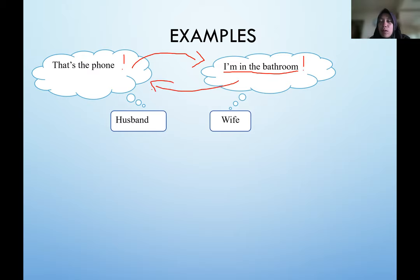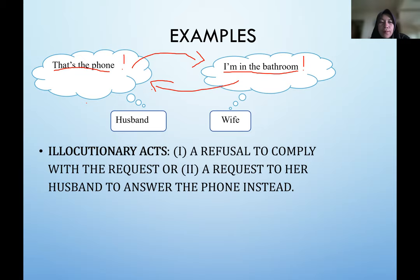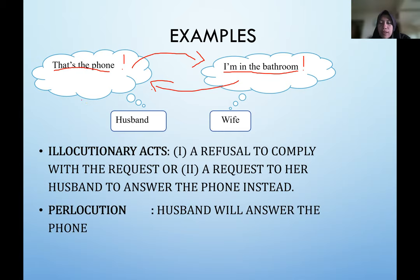So we can see that 'that's the phone' is the husband requesting the wife to answer, but the wife rejects it by saying 'I am in the bathroom,' which is also simultaneously requesting the husband to take the phone instead. The locutionary acts are 'that's the phone' and 'I am in the bathroom.' The illocutionary act is the husband wanting the wife to take the phone. The perlocutionary act is the husband likely answering the phone since the wife is in the bathroom.